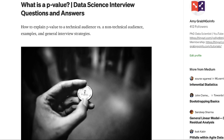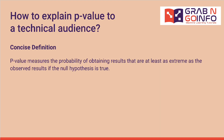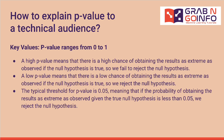When explaining p-value to a technical audience, we can say that p-value measures the probability of obtaining results that are at least as extreme as the observed results if the null hypothesis is true. P-value ranges from 0 to 1. A high p-value means there is a high chance of obtaining results as extreme as observed if the null hypothesis is true, so we fail to reject the null hypothesis. A low p-value means we reject the null hypothesis. The typical threshold is 0.05.